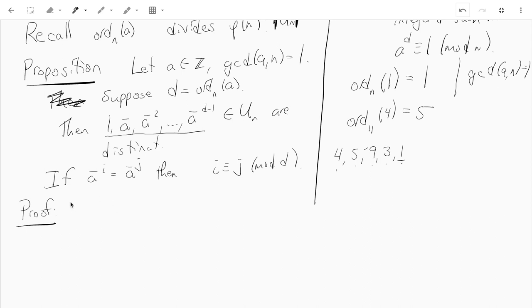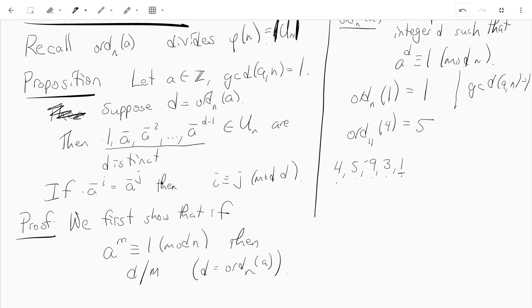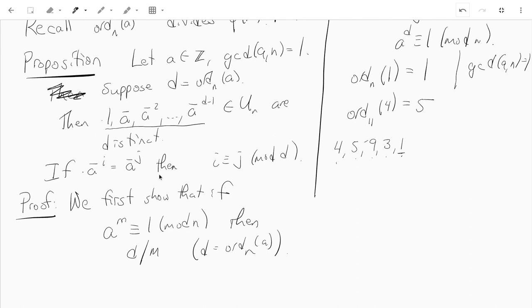So in order to show this, what we have to do is, we're first going to show that if a to the m is congruent to 1 mod n, then we're going to show the order actually divides m. So we're going to say d divides m, and d is the order of a mod n. And then this property will imply that the order of n divides phi of n, but it also tells us these two statements in the proposition. Just an aside, you can see that these two statements are kind of equivalent, but we'll just show that they follow from this other statement.